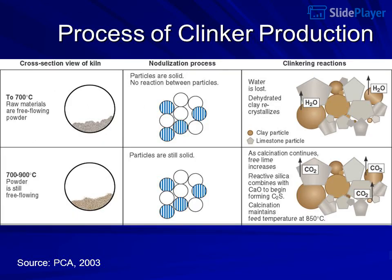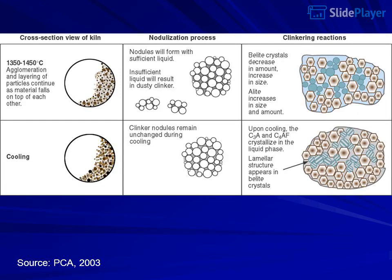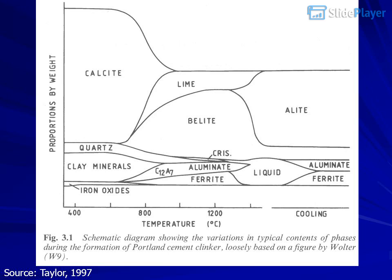Process of clinker production. Source: PCA 2003, Figure 2-10 — process of clinker production from raw feed to the final product. Source: Hills 2000; Source: Taylor 1997.